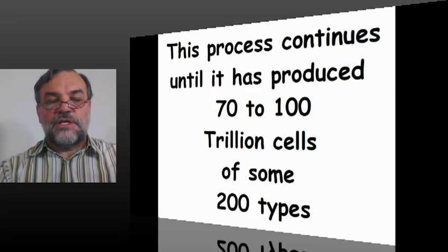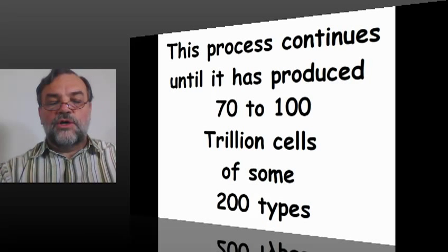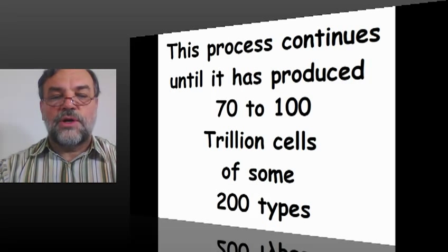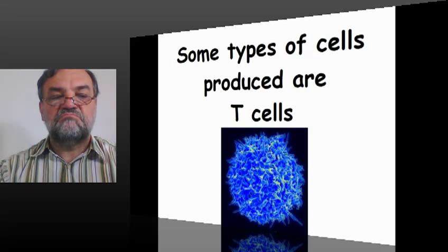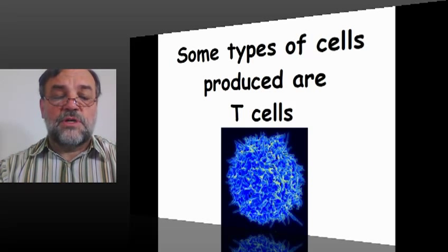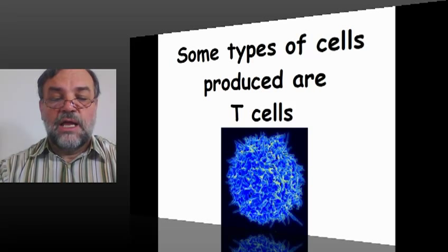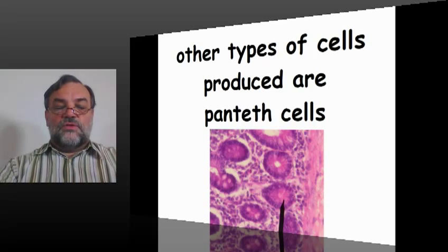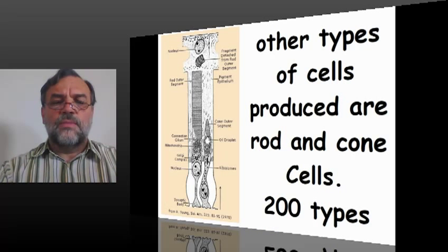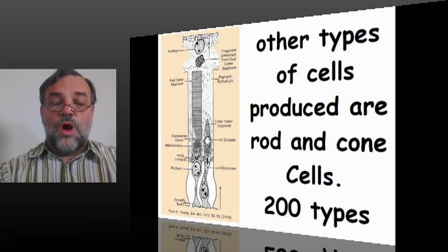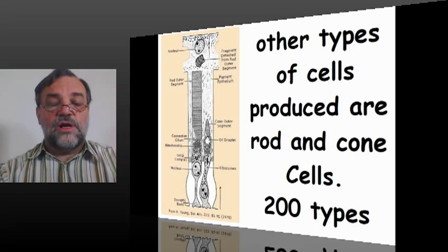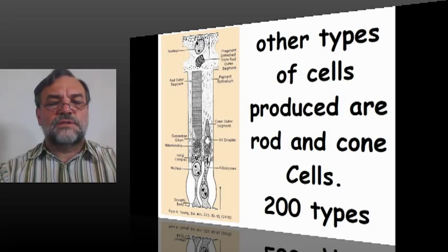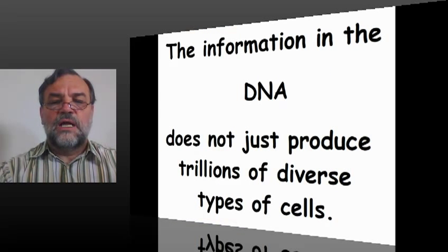This process continues until it has produced 70 to 100 trillion cells — trillion with a T — of some 200 types. Some of the types of cells produced include T cells, Paneth cells, and the rod and cone cells found in your eye. 200 types of cells, and the information for all of them is there in the DNA.